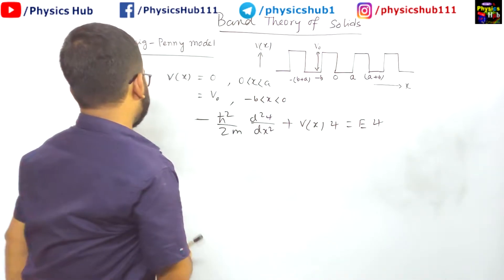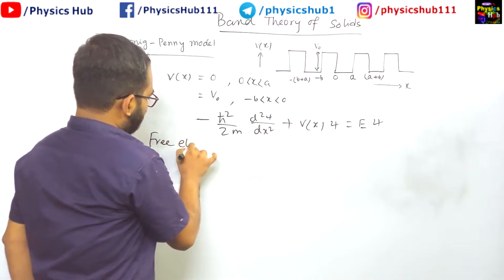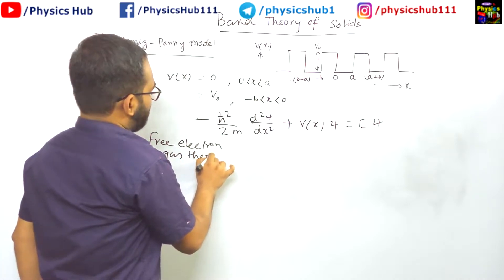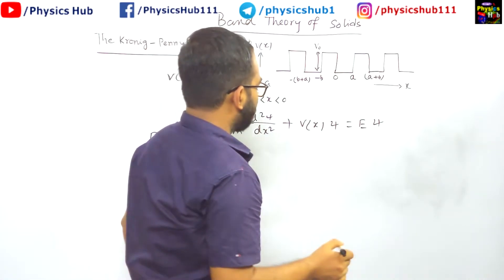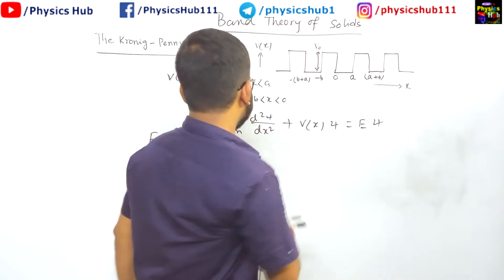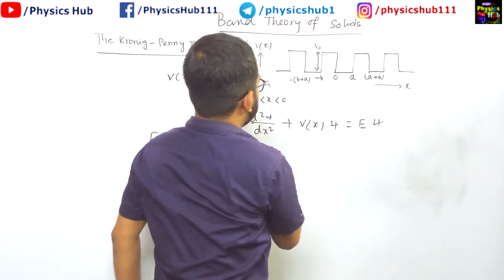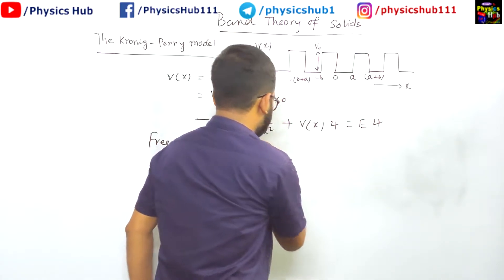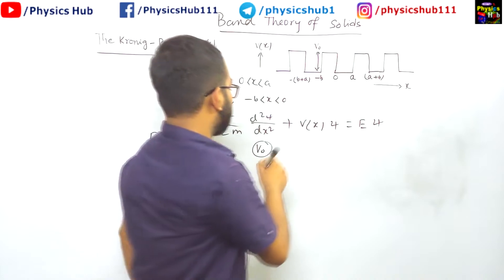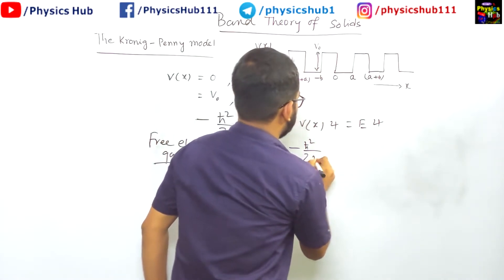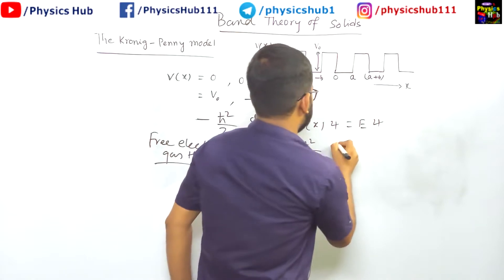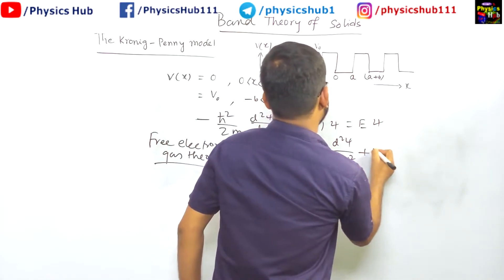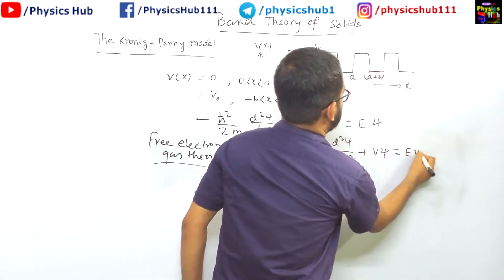Now, in case of free electron gas theory, we have to know about it. Free electron gas theory, we considered the potential to be constant means instead of v of x, the potential is only some constant v0. So the Schrödinger equation for that case was minus h bar square by 2m d square psi by dx square plus v0 psi equals e psi.